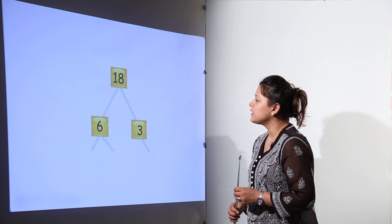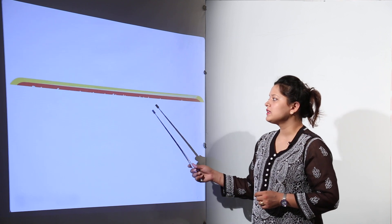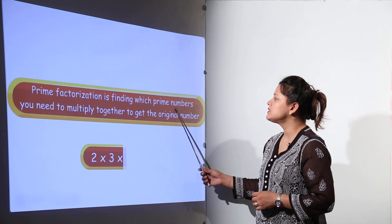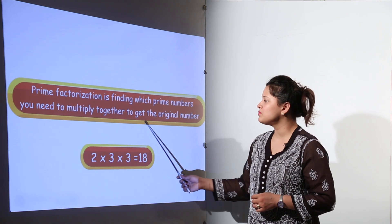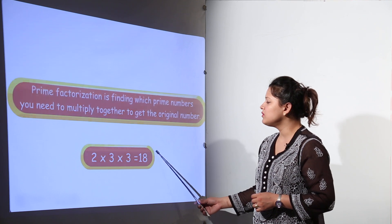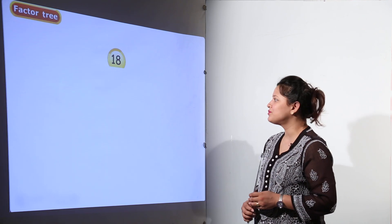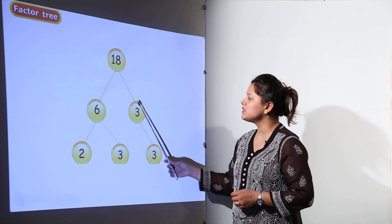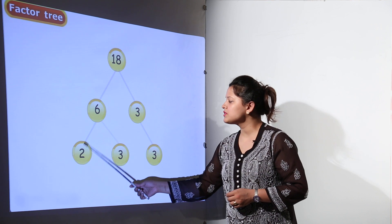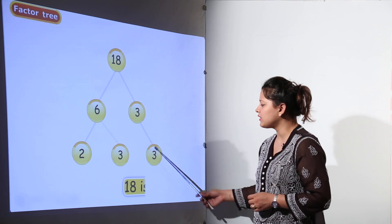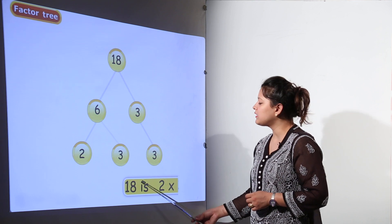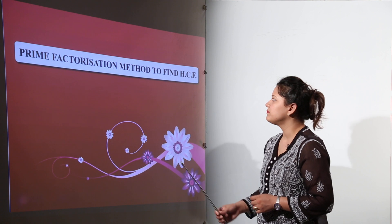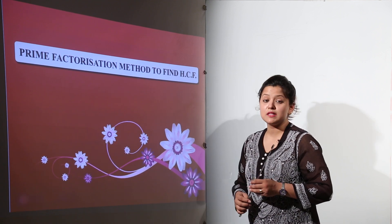Next is prime factorization. 18 can be written as 6 and 3, and we can factorize further. It is finding the prime numbers you need to multiply together to get the original number. For 18, factors for 6 would be 2 and 3, and factors for 3 would be 3 itself, giving us 2 x 3 x 3.